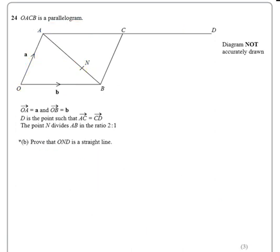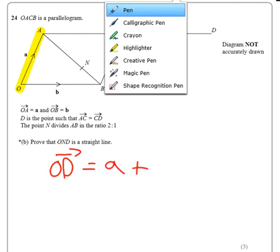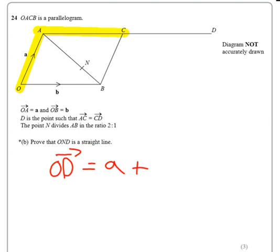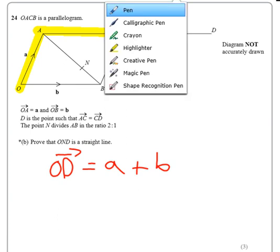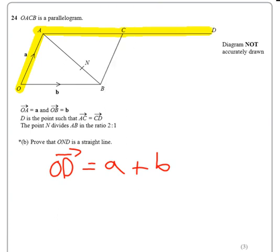O to D is going to be a plus A to C, which, because it's a parallelogram, is just going to be b again. And then, because both of these are equal, that's just going to be b as well. So O to D is equal to a plus 2b.